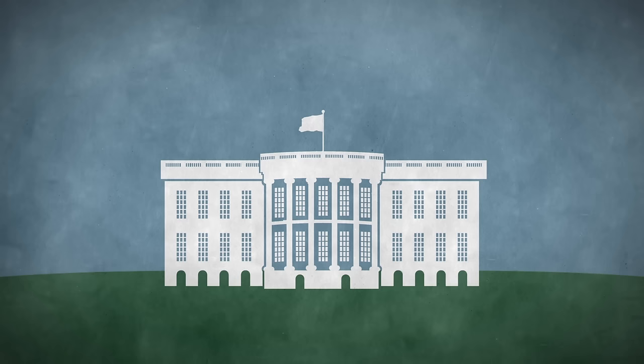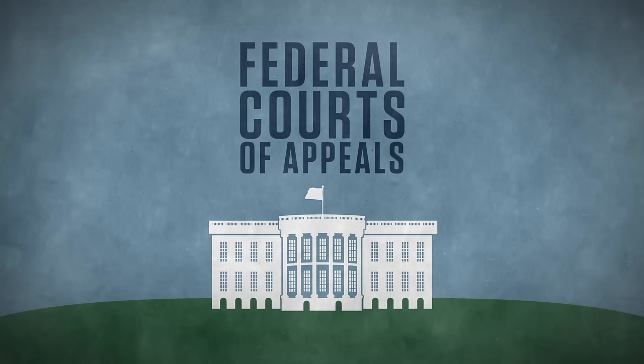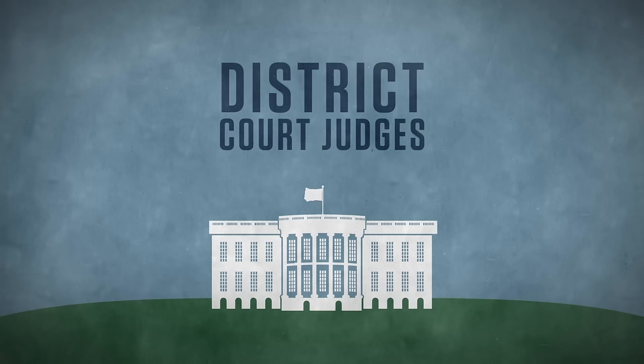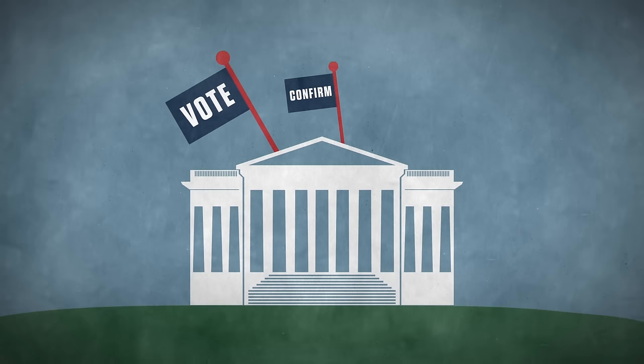Unlike the other branches of government, justices aren't elected. The president nominates Supreme Court members as well as federal courts of appeals and district court judges. The Senate then has the responsibility to vote and confirm or reject the appointment.